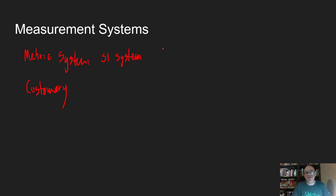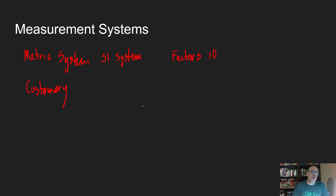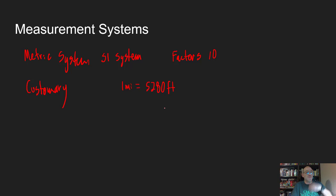The beauty of the metric system is that all units can be built up to larger units or broken down by factors of 10. When you multiply by factors of 10, you move the decimal to the right; when you divide by 10, you move it to the left. By comparison, in the customary system, one mile is equivalent to 5,280 feet. How many yards is that? Every yard is 3 feet — these are not related by factors of 10. They're just odd numbers.